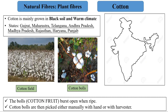Let's study plant fibers in detail. Cotton fibers are obtained from the fruits of cotton plants, called cotton balls. Cotton is mainly grown in black soil and warm climate. In India, cotton is mainly grown in Gujarat, Maharashtra, Telangana, Andhra Pradesh, Madhya Pradesh, Rajasthan, Haryana, and Punjab. The balls burst open when ripe and are then picked up manually or with a harvester.